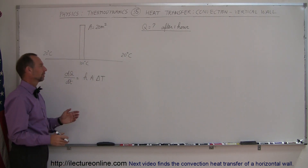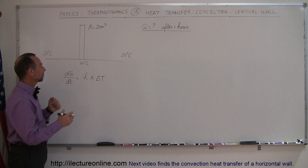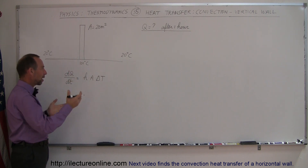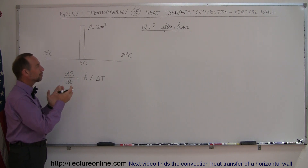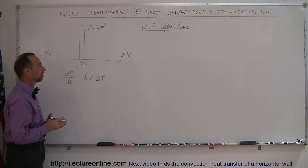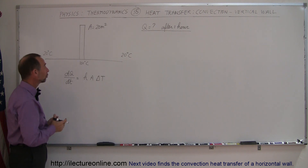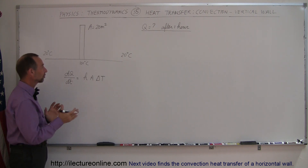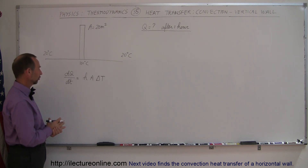Of course, we have to keep the wall at 100 degrees centigrade, so somehow heat has to be put into the wall to keep it at 100 degrees centigrade while it's leaking heat to the environment on both sides via convection currents.